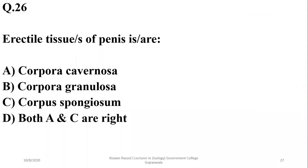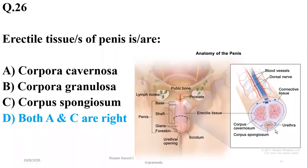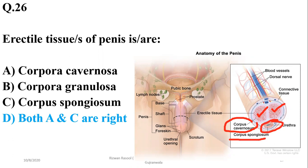Number twenty-six: the erectile tissues of the male reproductive organ are basically of two types — corpora cavernosa and corpus spongiosum — so the right option is delta. Corpora cavernosa are present on the upper side, while the corpus spongiosum is the lower part surrounding the urethra, so the right option here is delta.